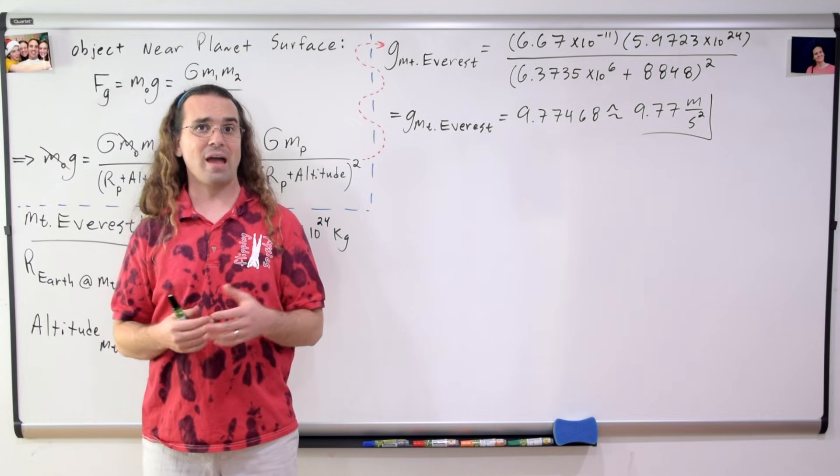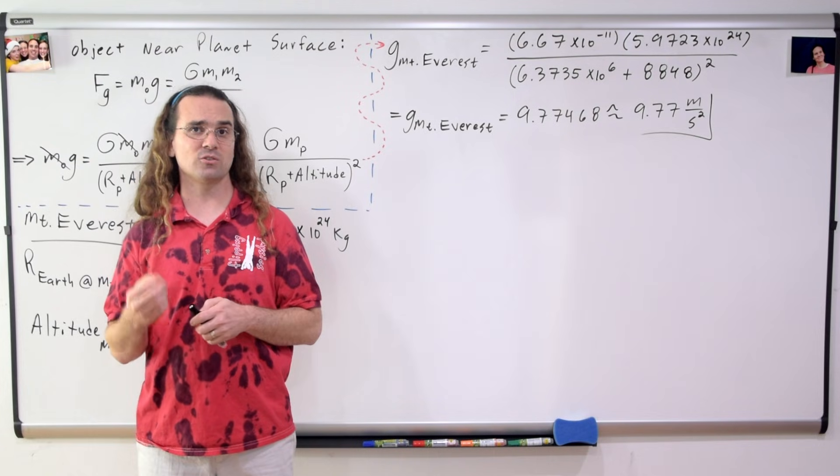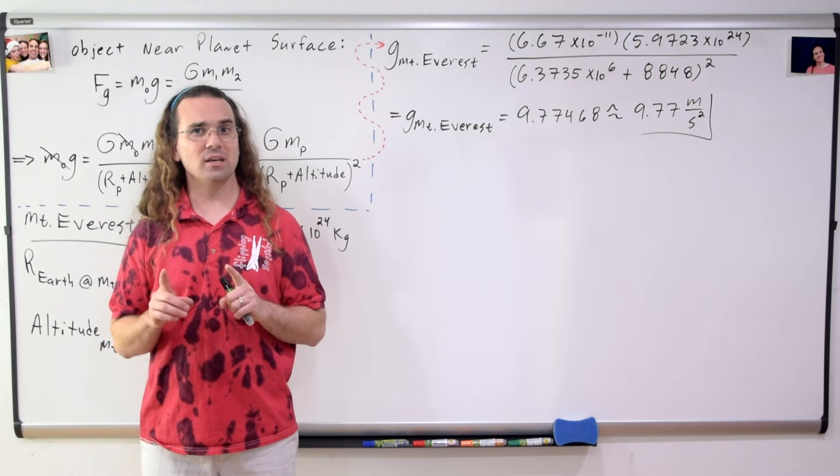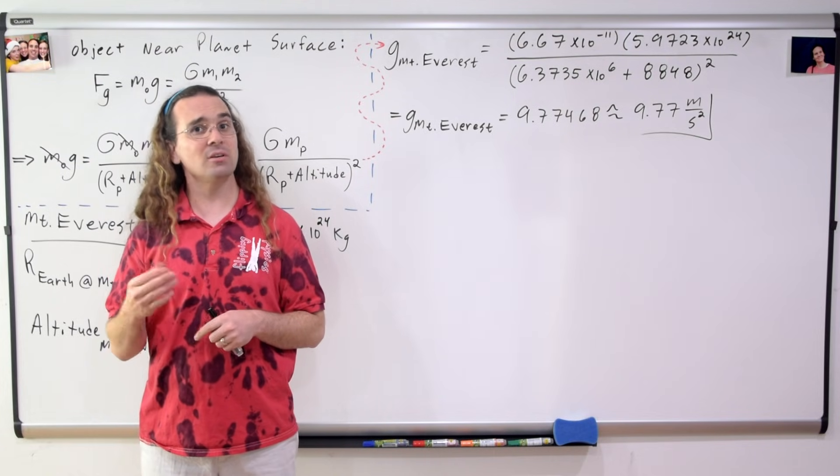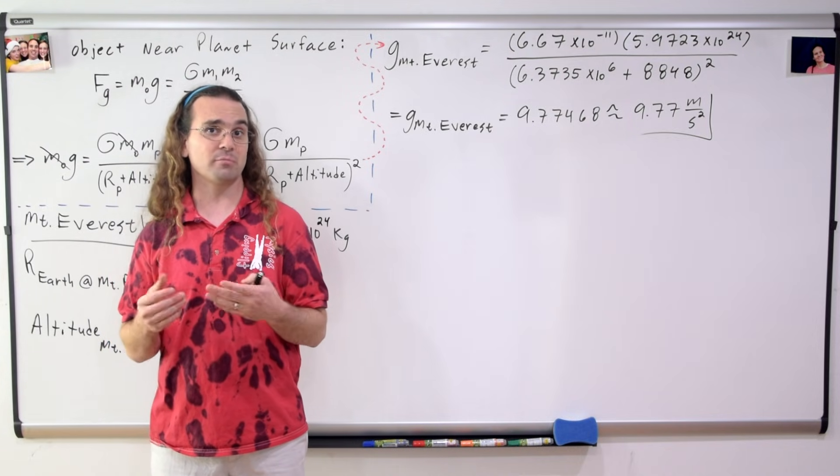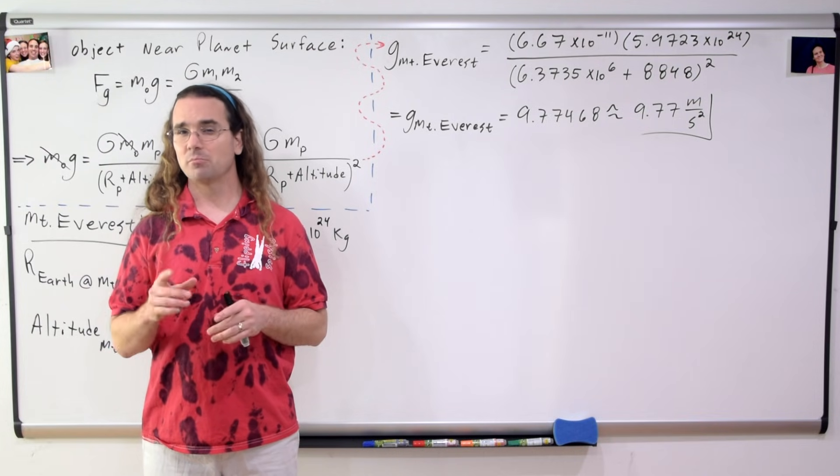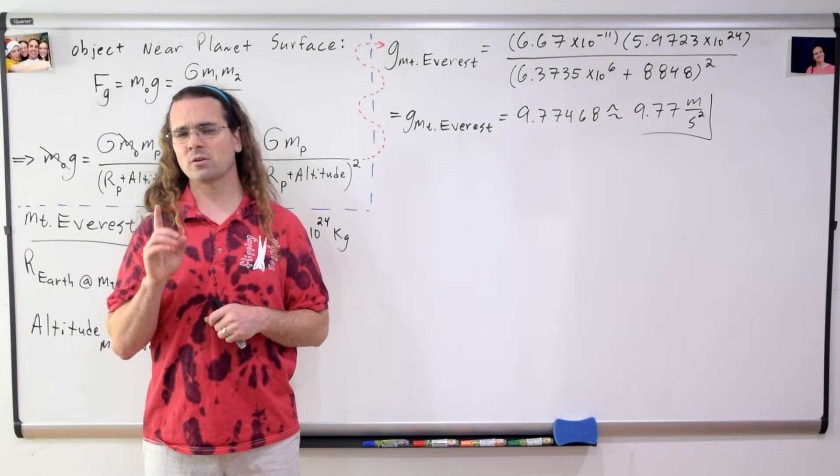The acceleration due to gravity at the top of Mount Everest is 9.77 meters per second squared. So notice the acceleration due to gravity, which is something we have previously considered to be constant on the surface of planet Earth, is actually not quite constant. But it is pretty darn close.